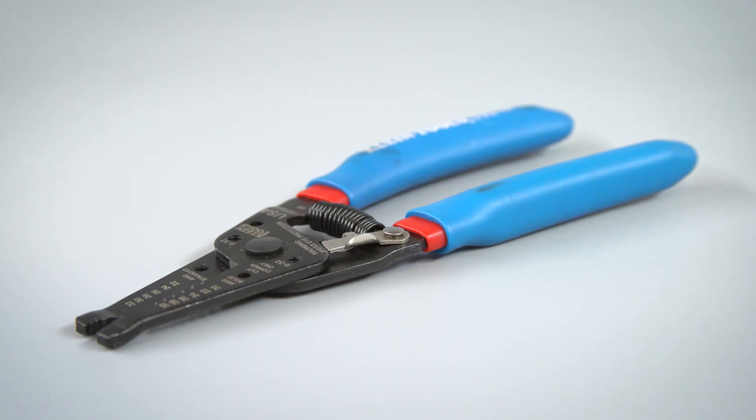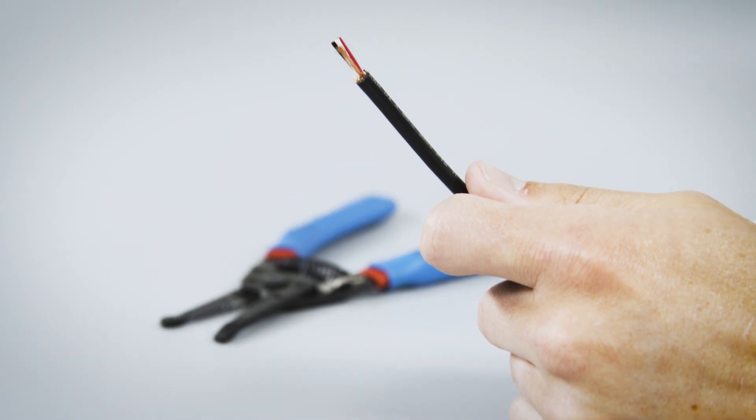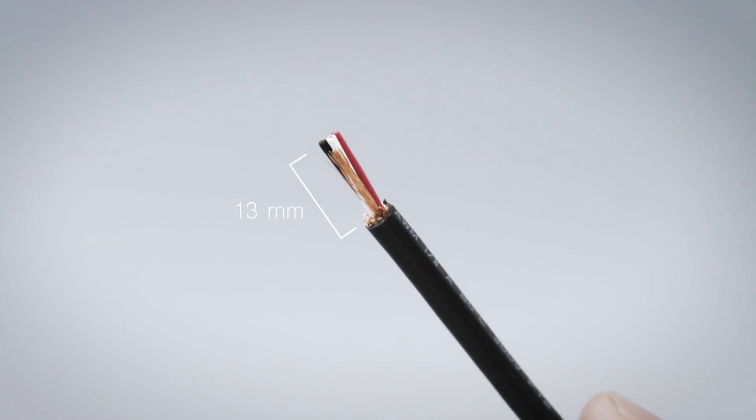Strip 10 millimeters off the blunt end of the outer jacket and remove the shield if applicable. Try not to strip more than 13 millimeters.